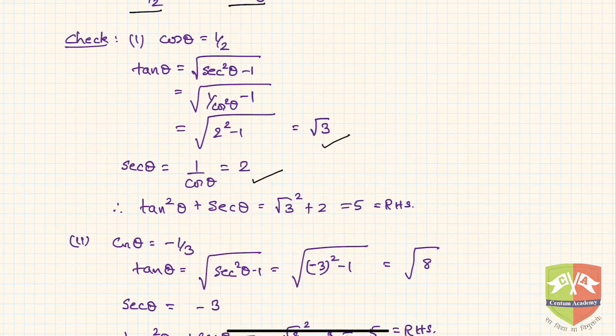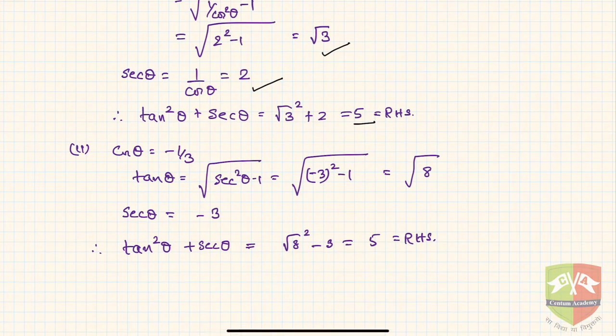Similarly, when cosθ = -1/3, we also get tan²θ + secθ = 5. This indicates that both solutions are correct: cosθ = 1/2 and cosθ = -1/3.